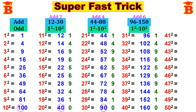Therefore: 31 squared equals 961, 32 squared equals 1024, 33 squared equals 1089, 34 squared equals 1156, 35 squared equals 1225, 36 squared equals 1296, 37 squared equals 1369, 38 squared equals 1444, 39 squared equals 1521, and 40 squared equals 1600.